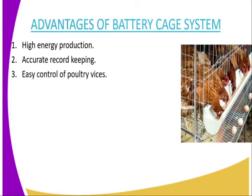Number three, easy control of poultry vices. For example, cannibalism and egg eating — because there is no way the bird will come in contact with the egg, as there is a lever mechanism that will make sure that the egg slides and it will not be reached by the bird upon being laid. Also, cannibalism cannot take place because the birds are not sharing the same cage.